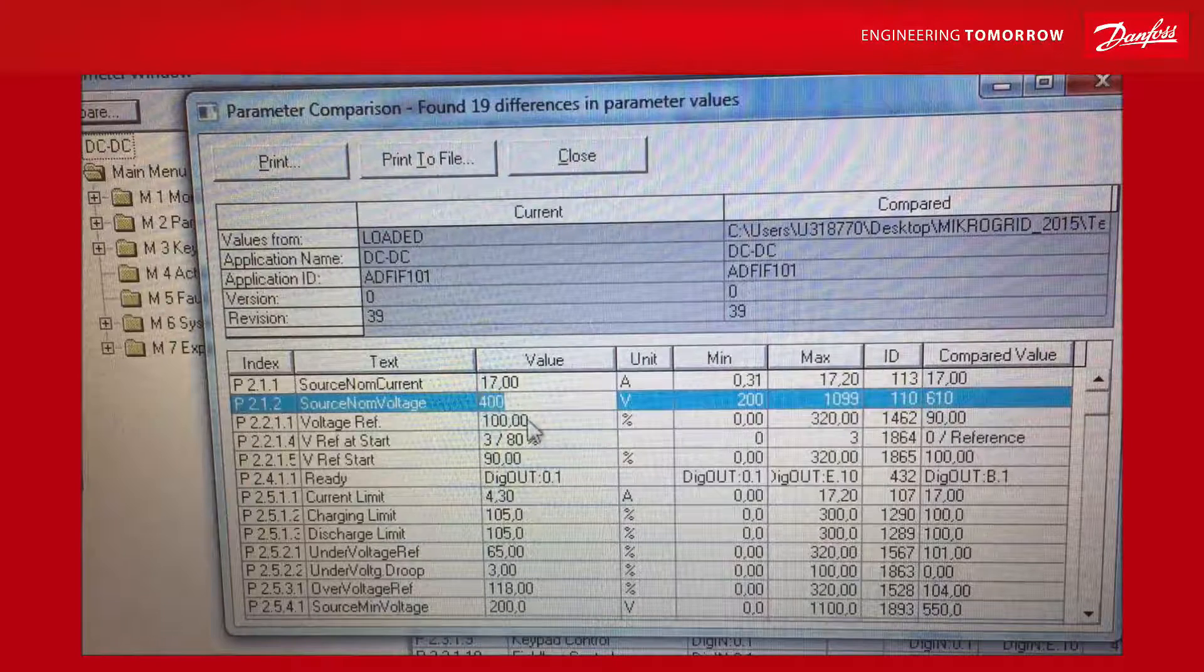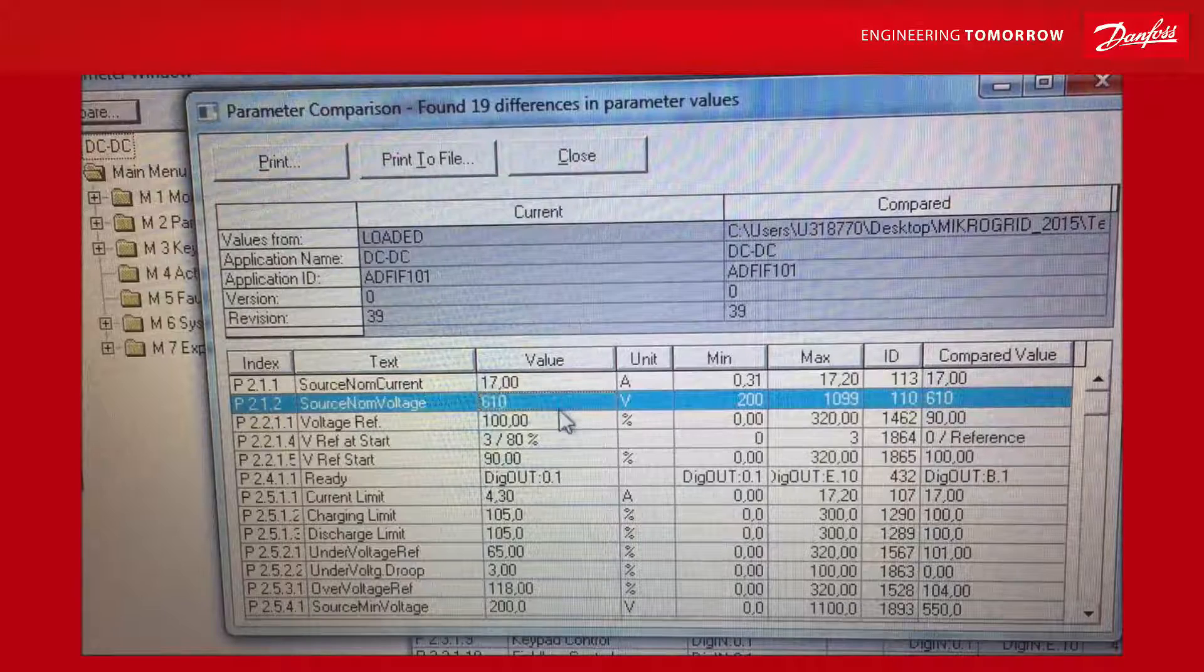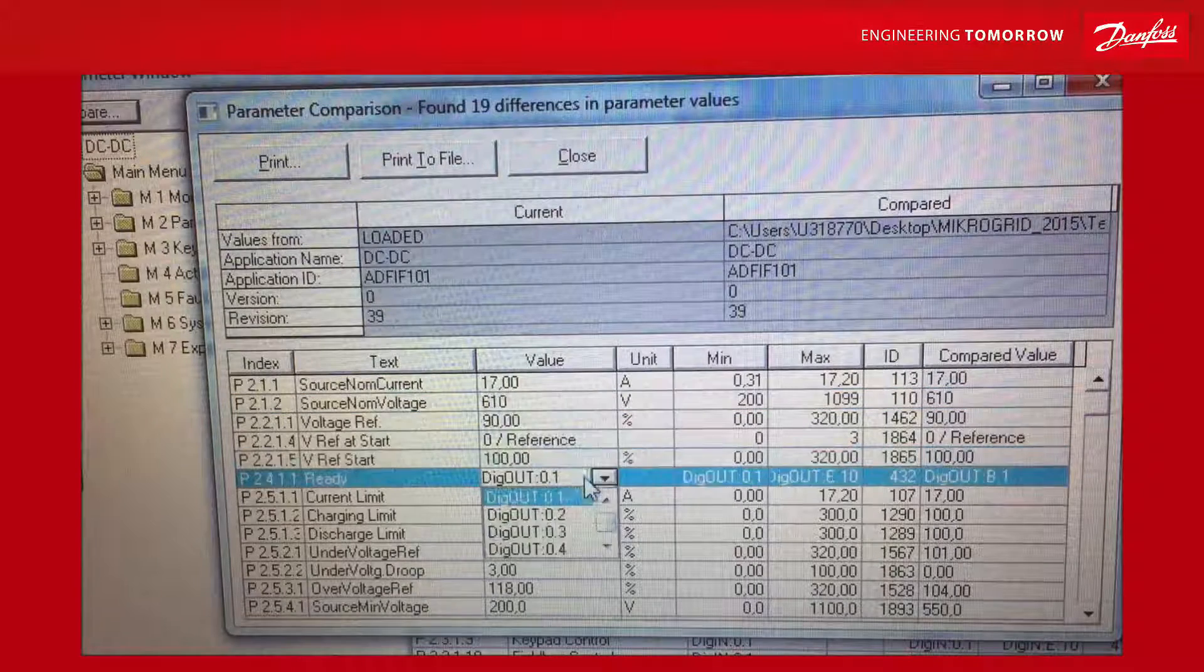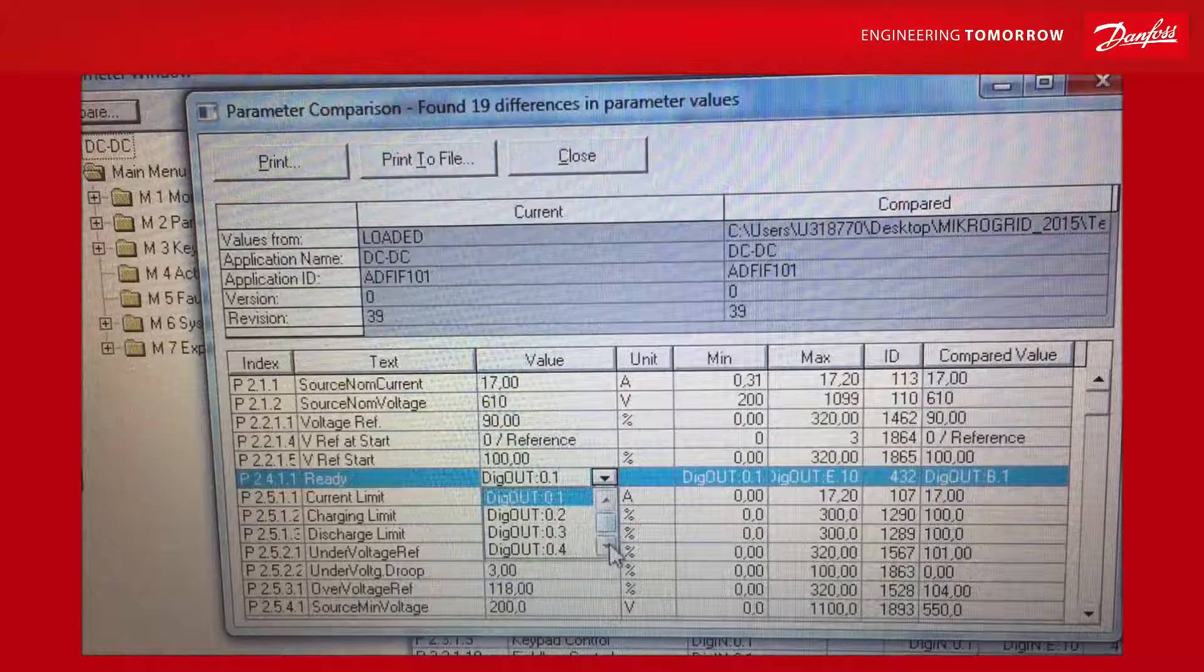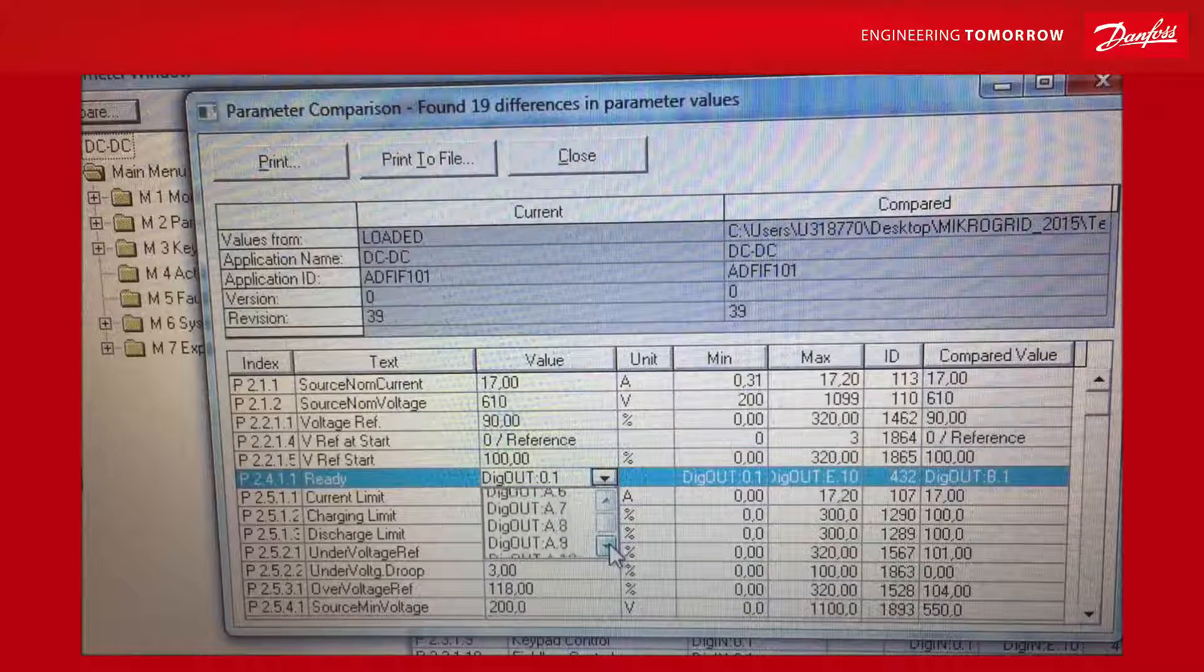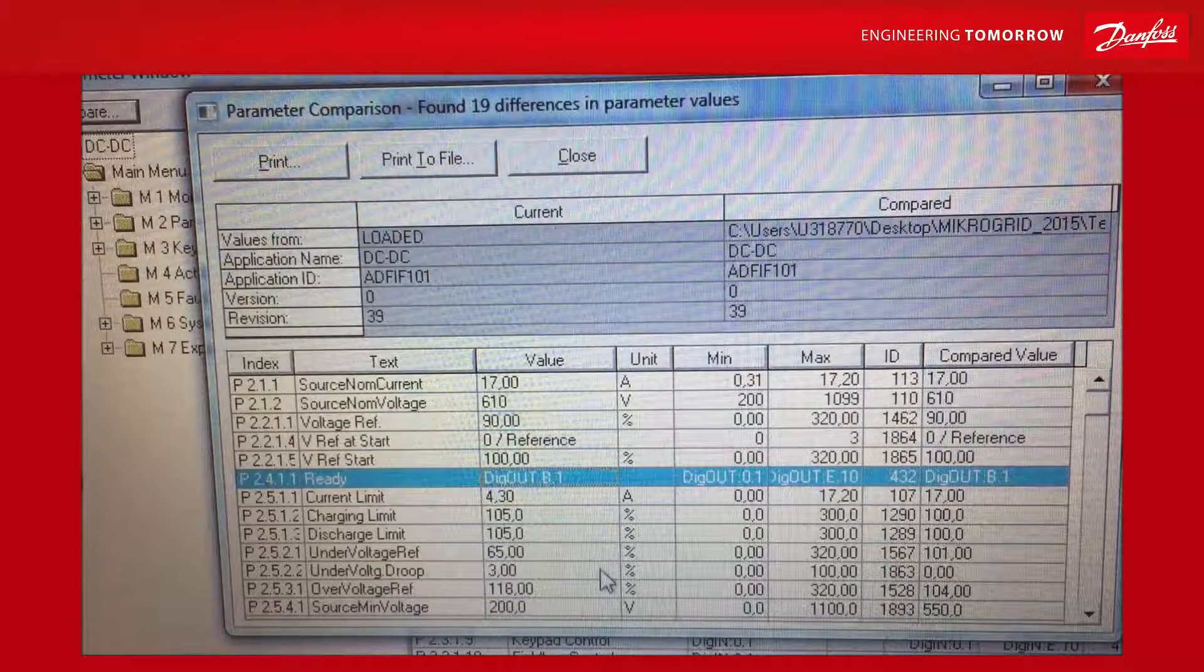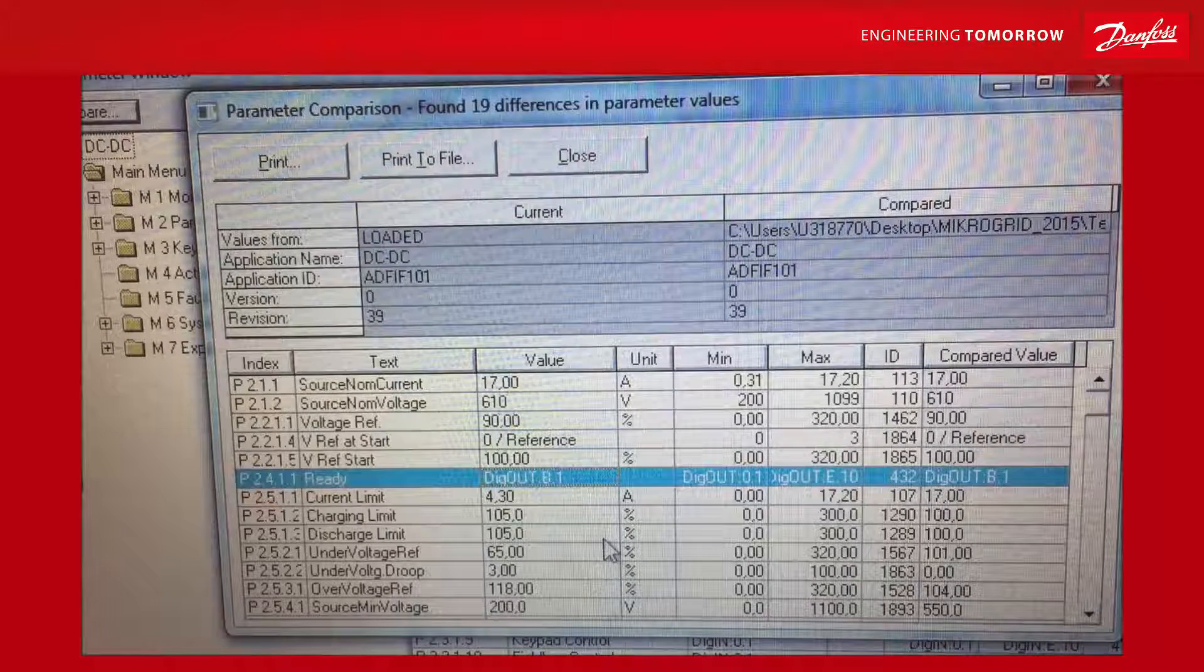The source nominal voltage, that is the battery. The nominal of this battery is 610. I have a pre-charge functionality on my first digital output. So I need to set this to B1. That is the first digital output on the B-slot.